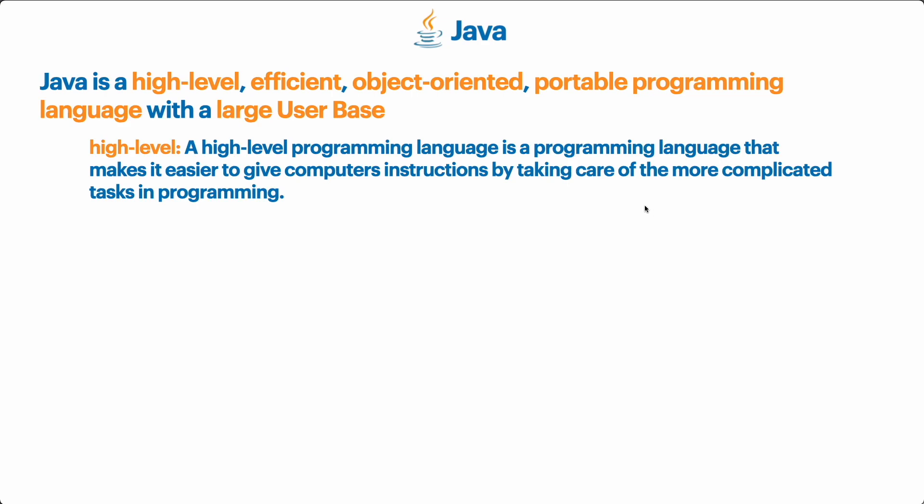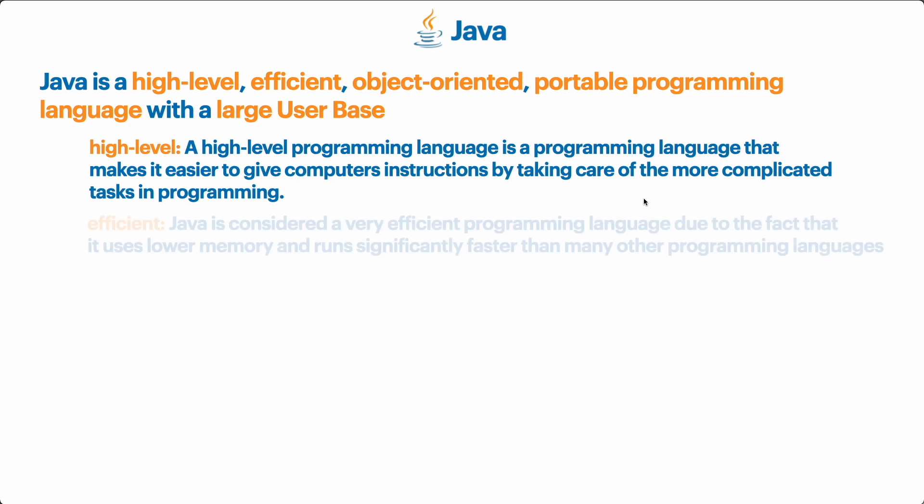We'll talk more about that translator a bit later in this video. The second term to analyze is 'efficient.' Java is considered a very efficient programming language due to the fact that it uses lower memory and runs significantly faster than many other programming languages. The architecture of Java used a lot of optimization and clever tricks to make it faster and use less memory. This means Java can run on devices that are not as powerful — for example, a Java program can run on a lower-end device where a Python program might struggle.